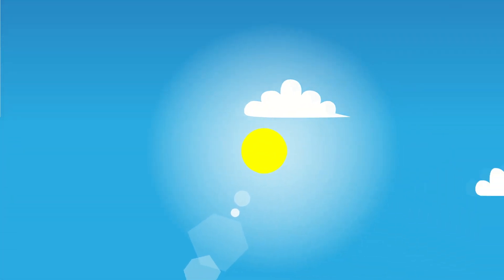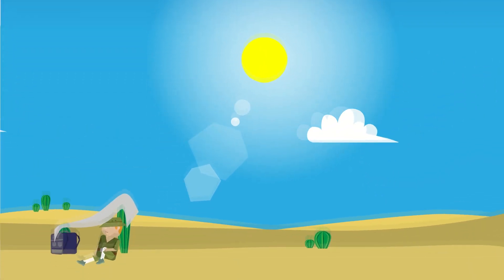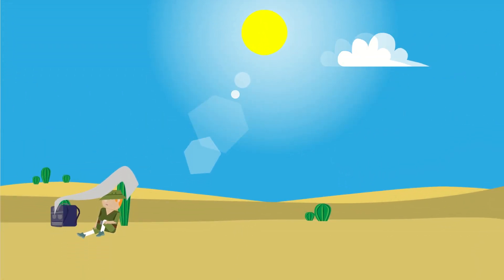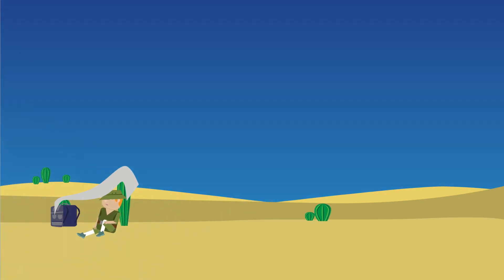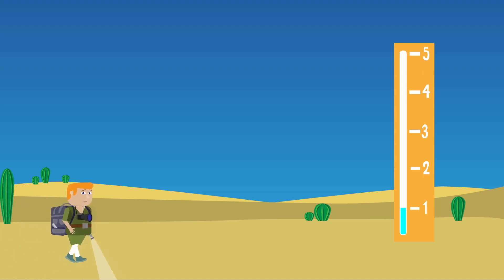Try to move at night. In the daytime, it is better not to carry out long transitions. It is better to find or create shelter for yourself and wait until the heat is off. In a cool night, you can go further and avoid the risk of getting heat stroke. When it is very hot, such a simple tactic will allow you to save up to three liters of water per day.